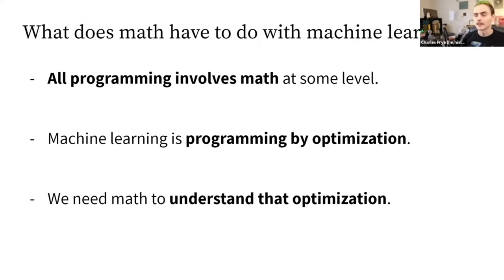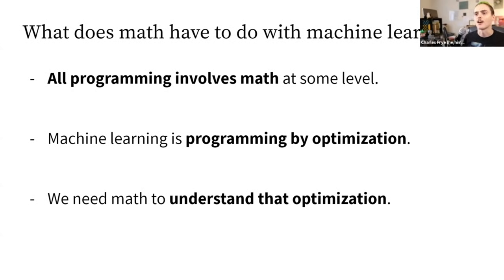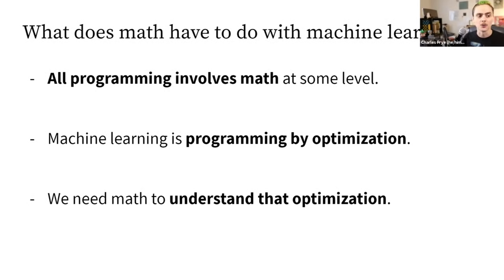At a very high level, what does math have to do with machine learning? All programming involves mathematics at some level — mathematics, programming, and computers have been tied together since the inception of computer science. Machine learning in particular is programming by optimization; the way we program computers to do things in machine learning is through optimization.